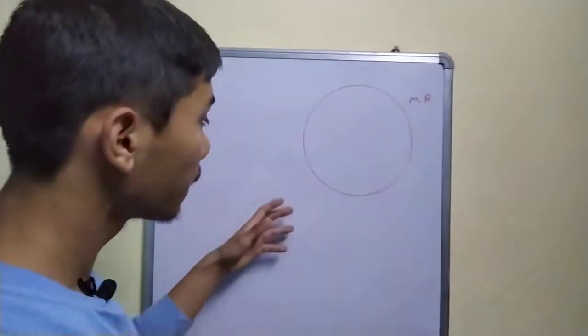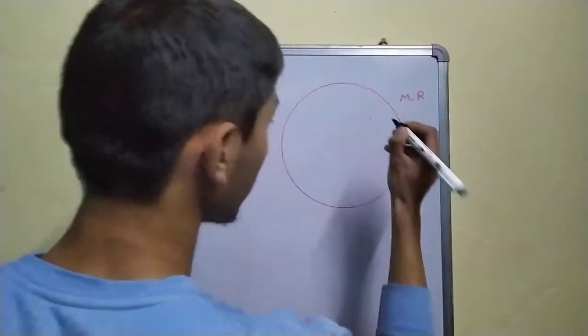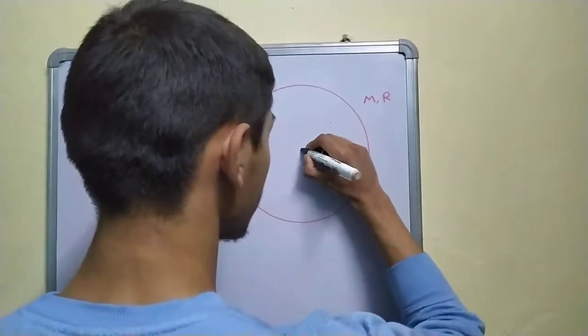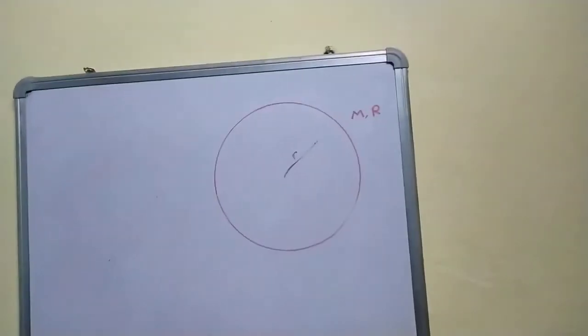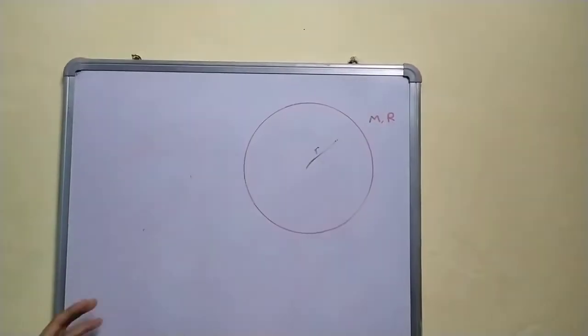In this video we will be calculating the field at a point, at an internal point at a distance some small r away from the center of a uniform solid sphere.